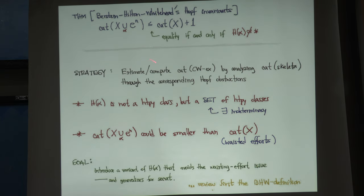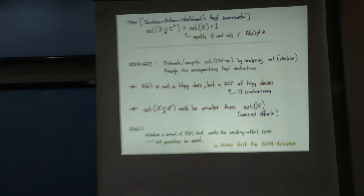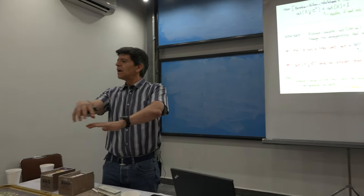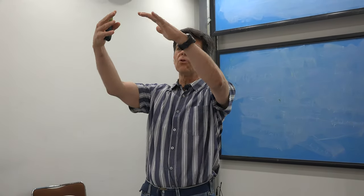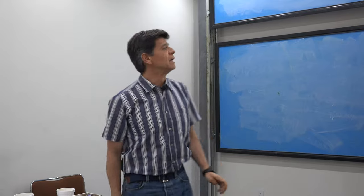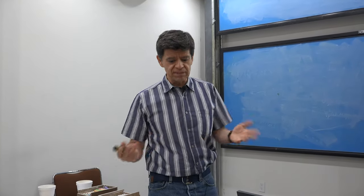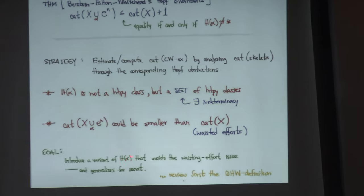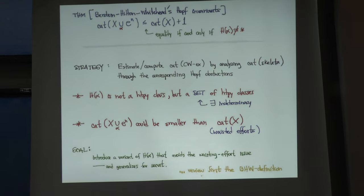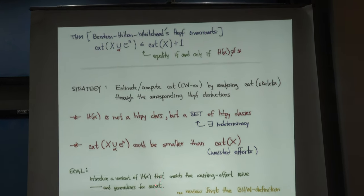Here is a strategy to try to compute the category of a space: start computing the category of the skeleton, decide what the category of the one-skeleton is, then attach the next cells — each increases by at most one — and decide what it does, and so on. The problem is that you might do a lot of work computing the category, and when you attach the next round of cells the category could drop to the floor — it might be contractible after attaching a final cell. So you don't want to waste that effort. I want to introduce a slightly modified version that avoids this wasting-effort problem, and not only does it apply to category, but it generalizes to TC or any fibration.